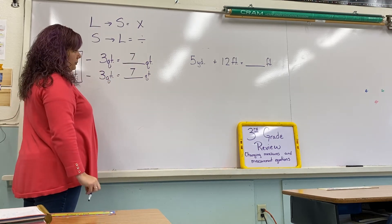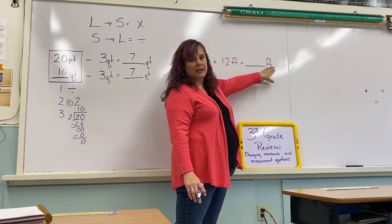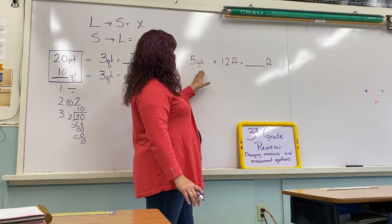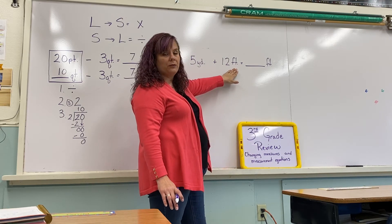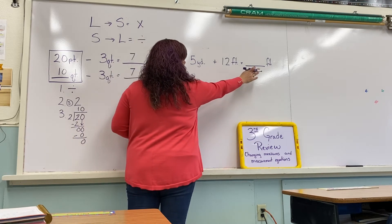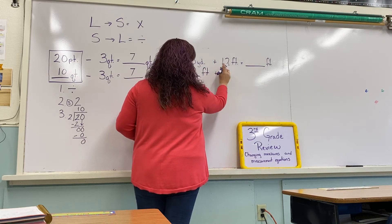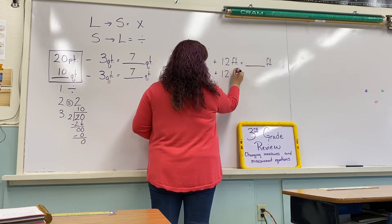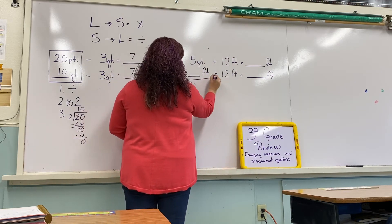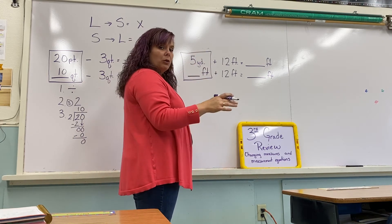Now let's look at this one: 5 yards plus 12 feet equals how many feet. First we need to identify what needs to change. Our answer needs to be in feet, so which measurement is not already in feet? Yes, very good — we're changing the 5 yards to feet. So we have blank feet plus 12 feet equals how many feet. We put a box around the one we're changing so it stands out and we don't use numbers we shouldn't.